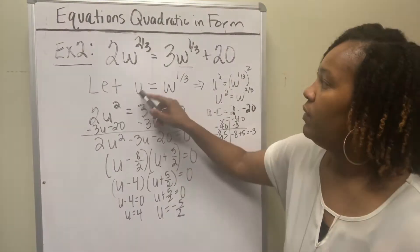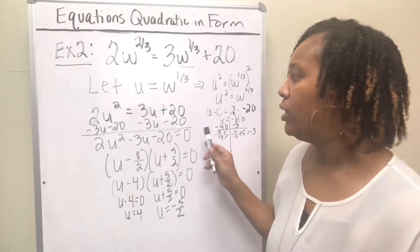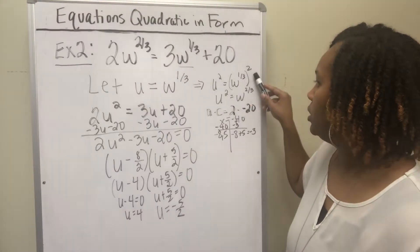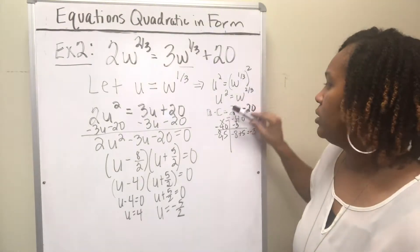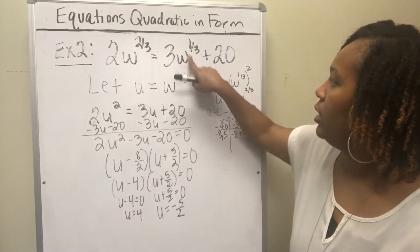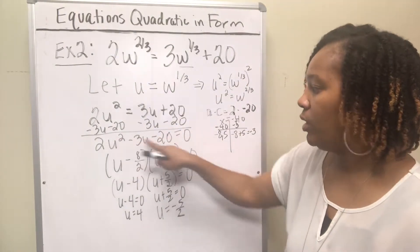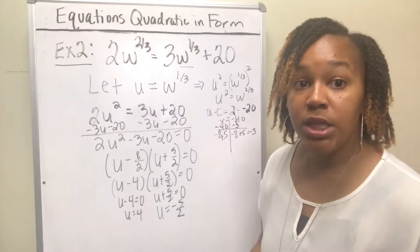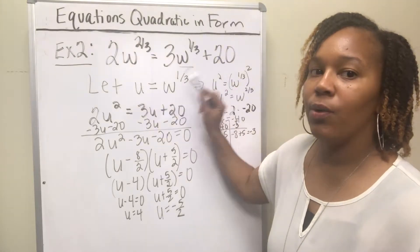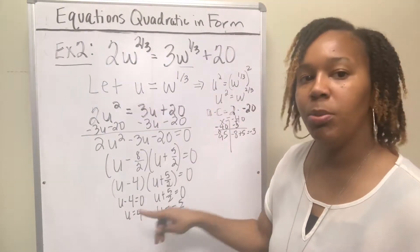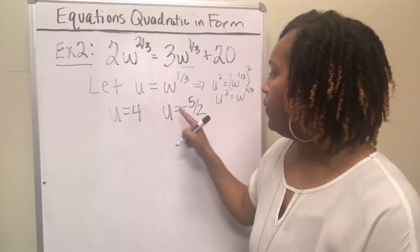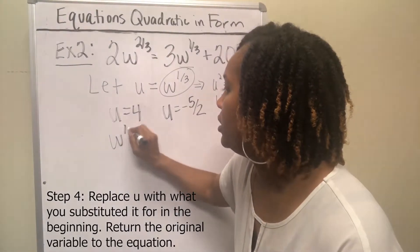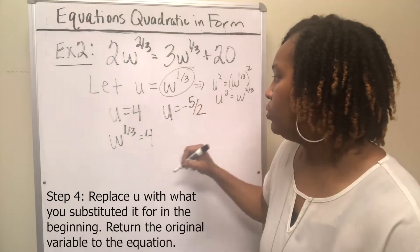All we've done so far is let u equal the variable with the smallest exponent, which is w^(1/3). Since u = w^(1/3), if I square both sides, u² = w^(2/3) because you multiply the exponents. We replaced w^(2/3) with u² and w^(1/3) with u, ended up with the quadratic equation, solved it, and got u = 4 and u = −5/2. Now, are we finished? No — we're not finished because we're trying to solve for w. So we've got to get rid of the u's and put w back into the equation. Since we substituted u for w^(1/3), we replace u with w^(1/3).